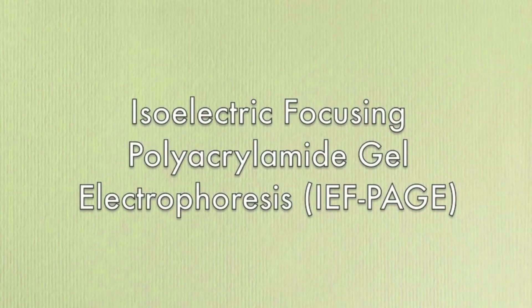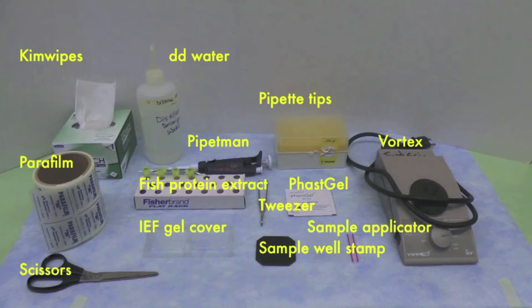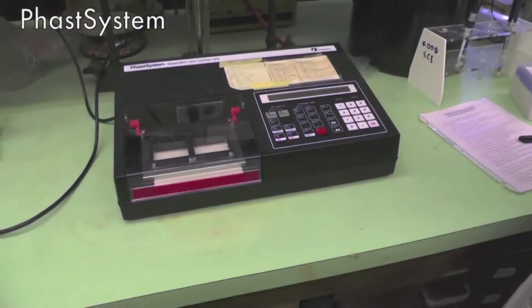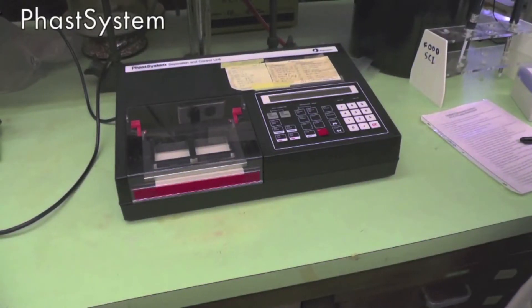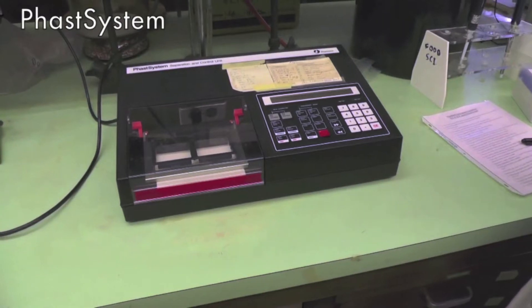IEF PAGE stands for Isoelectric Focusing Polyacrylamide Gel Electrophoresis. Here is the equipment you will need. This is the FAST system that you will be using to run the electrophoresis.